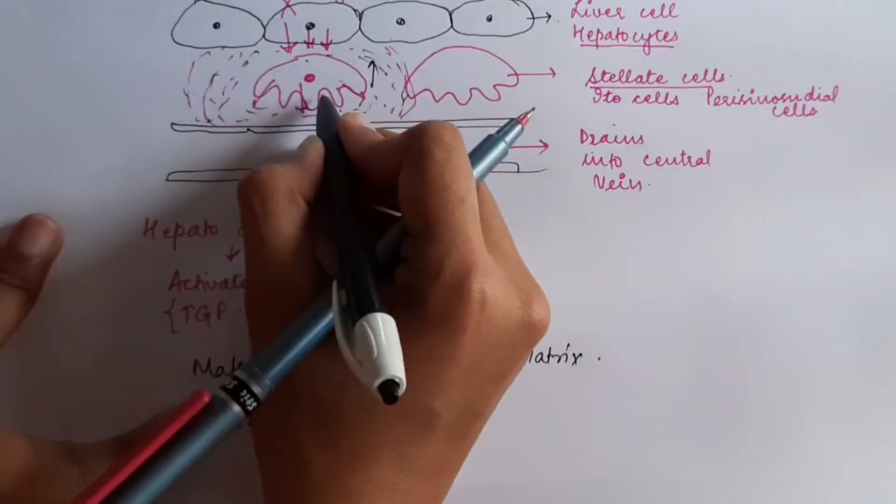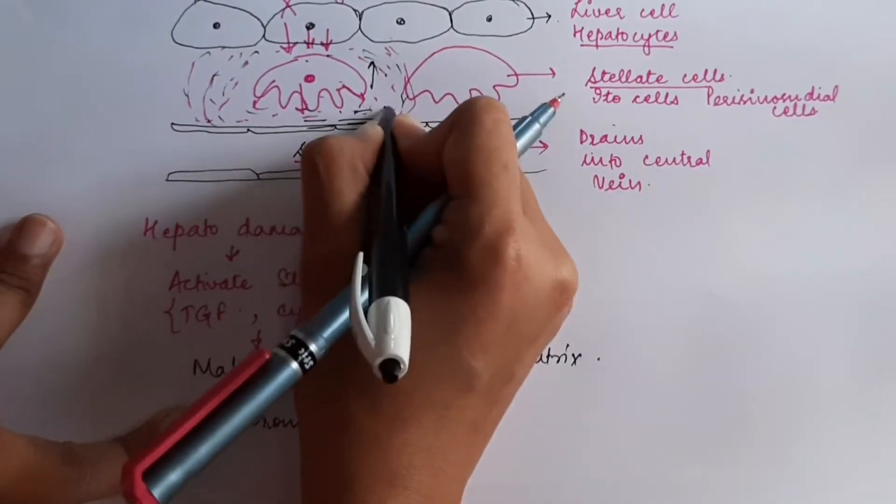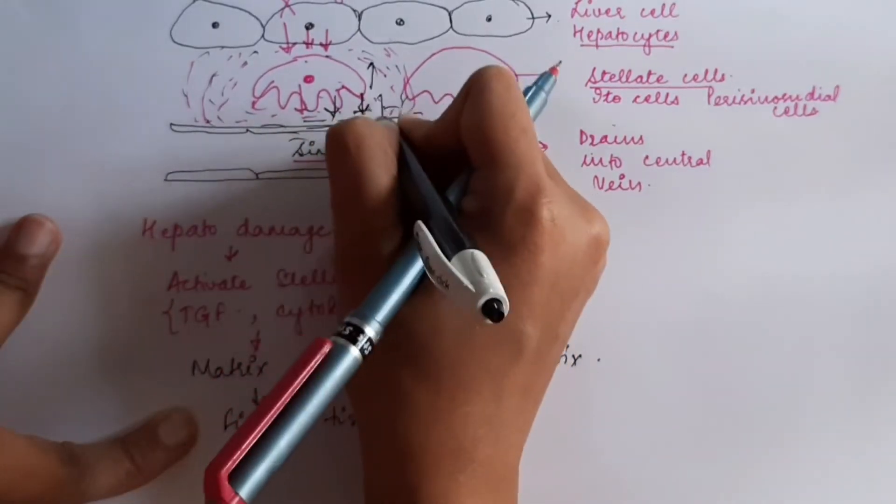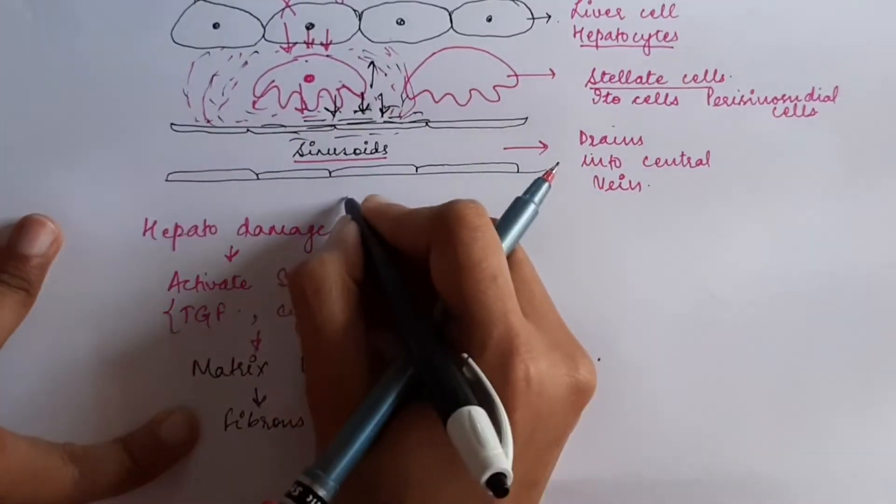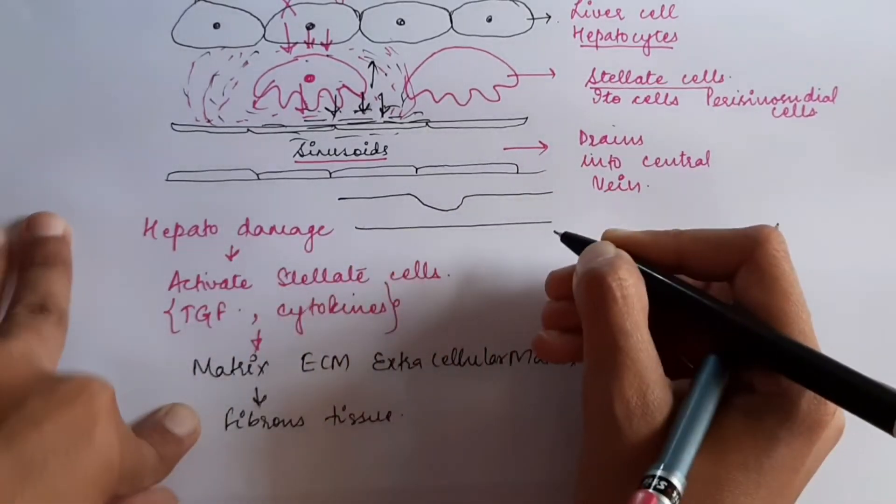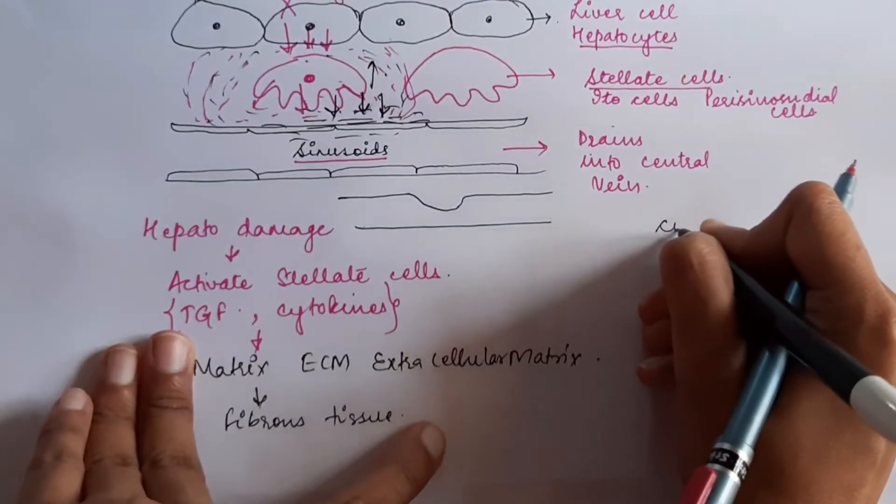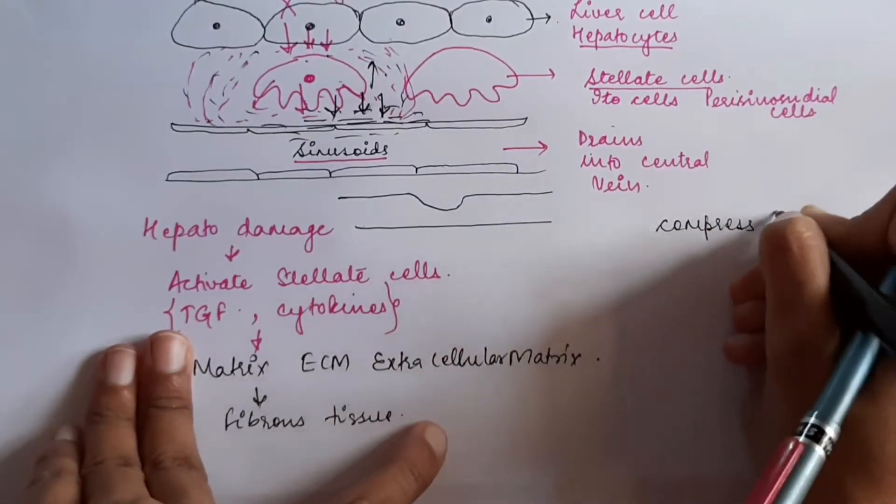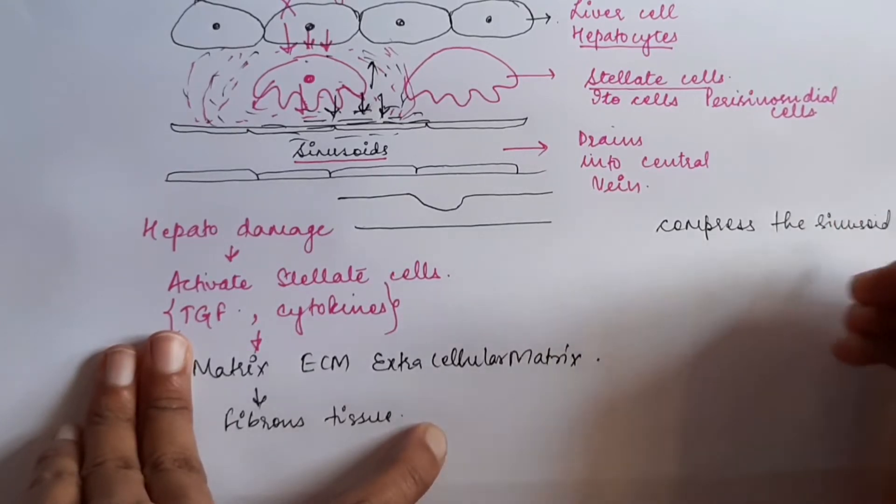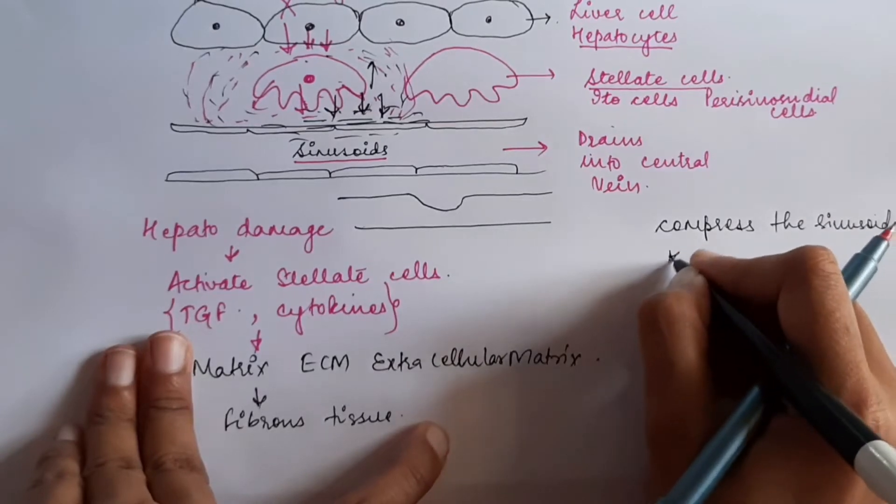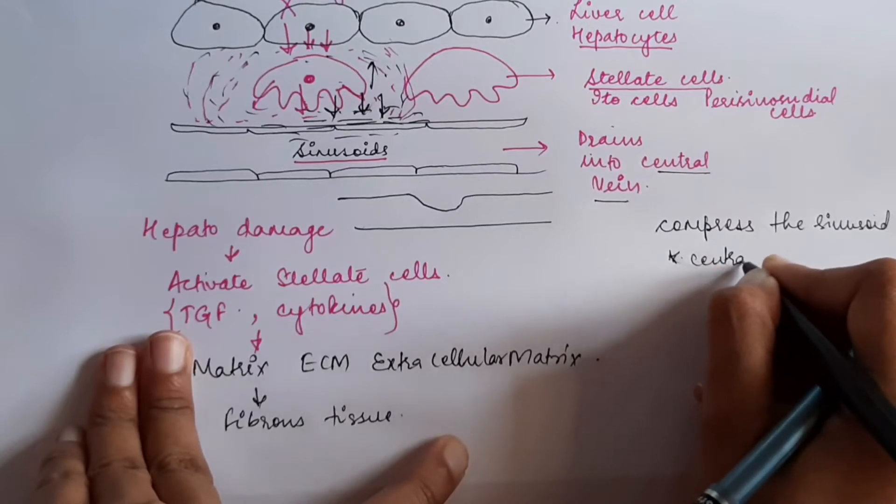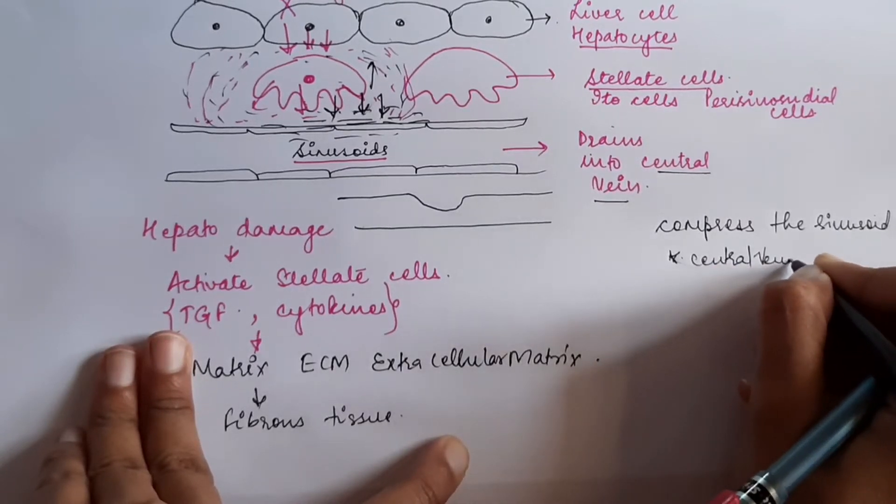Now, when this fibrous tissue increases in amount, it will start compressing the sinusoidal space. It will put pressure on the sinusoid. So, the sinusoidal space will be compressed. As there is compression in the sinusoid, further the central vein will be compressed.